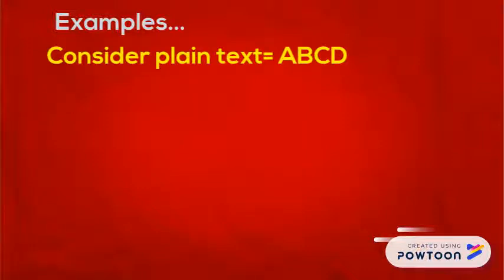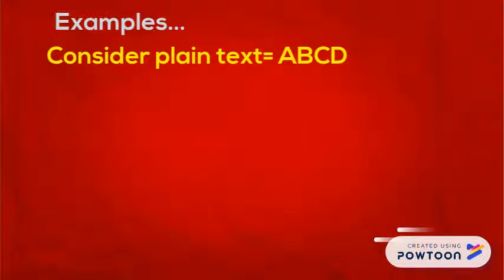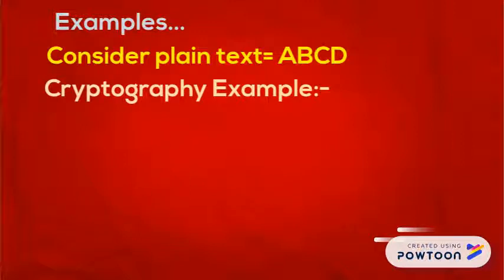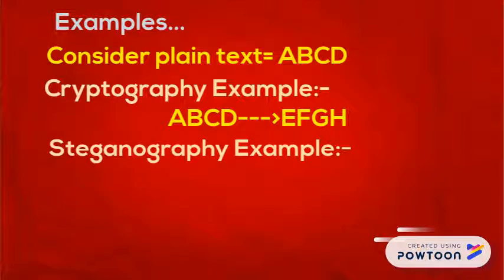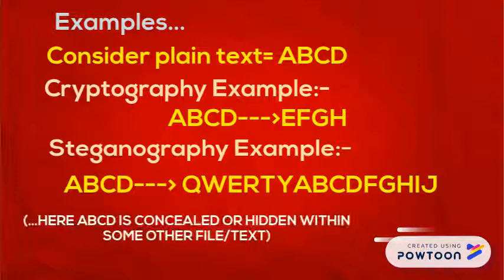For example, consider plain text equal to A B C D. In cryptography, A B C D is converted to E F G H, which is the cipher text. While in steganography, A B C D is hidden within other letters or text.